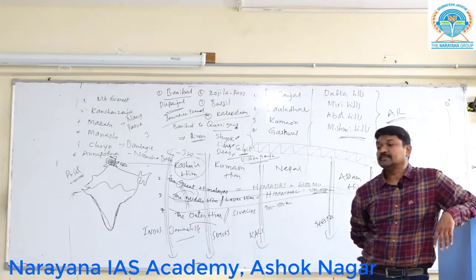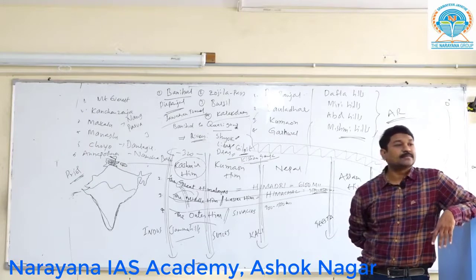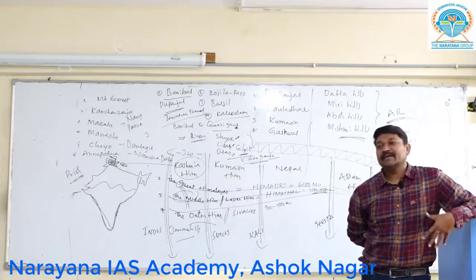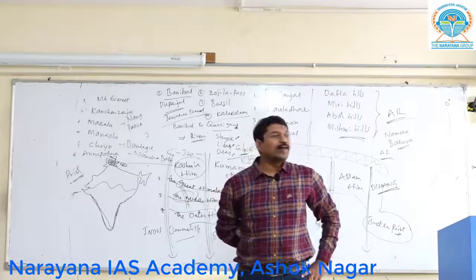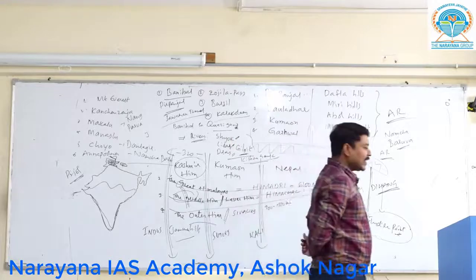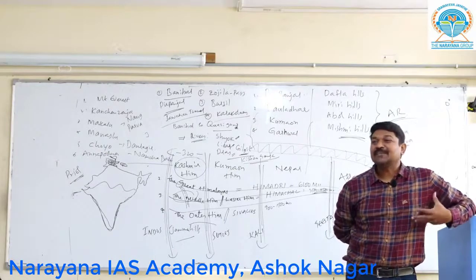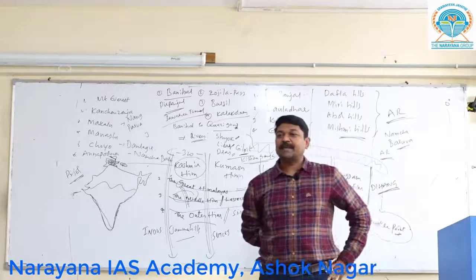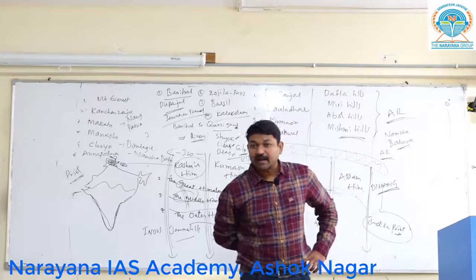Next, human activities. The main activities are animal rearing, cultivation, and plantation. The people rear animals like sheep and goats — more specifically, the Pashmina goat (P-A-S-H-M-I-N-A) and blue sheep.